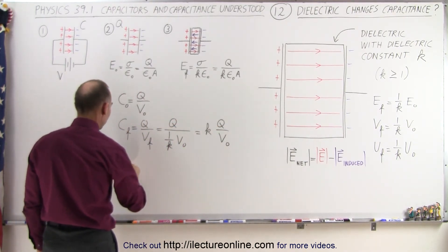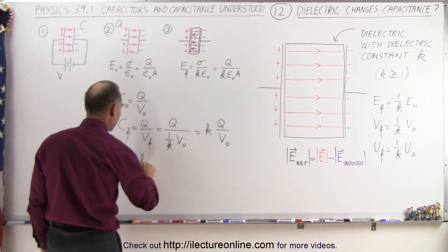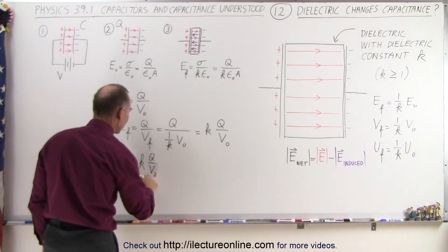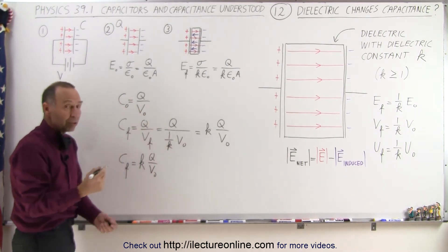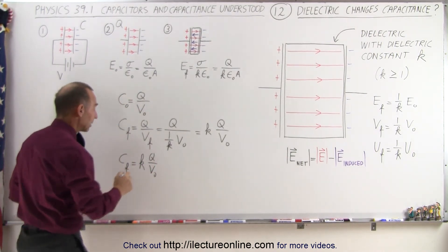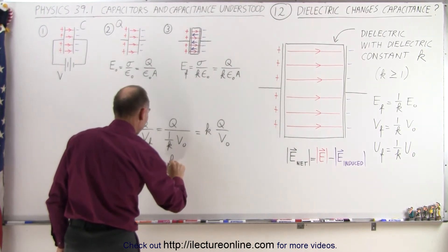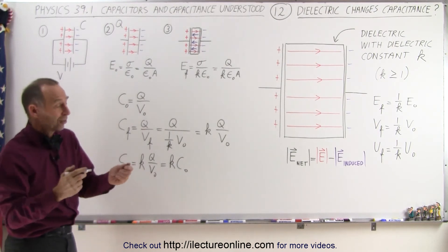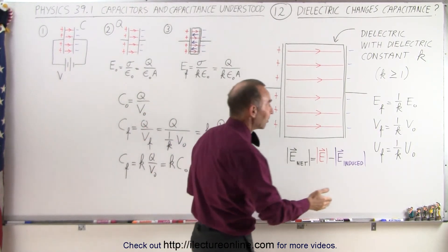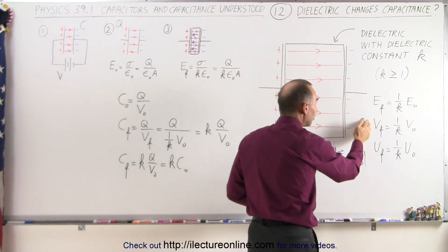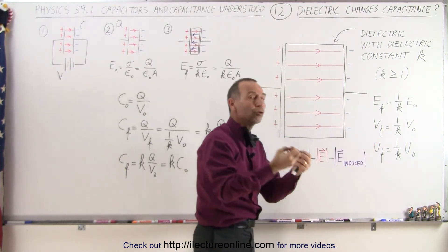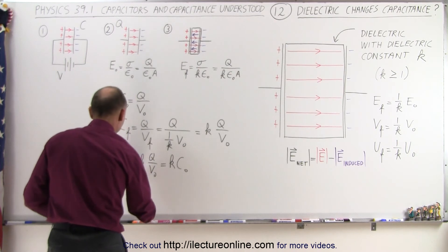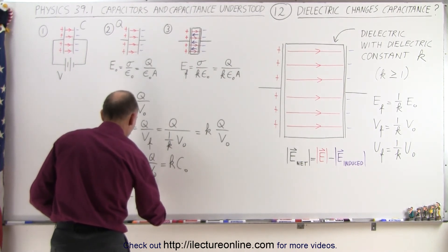Since c final is equal to k times q over v initial, and q over v initial was equal to the initial capacitance before we put the dielectric in there, this is therefore equal to k times c initial. And here you can see that the capacitance bucks the trend. In all other respects — the electric field, the voltage, and the energy — all were reduced by a factor of k. Instead, the capacitance is increased by a factor of k.